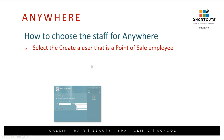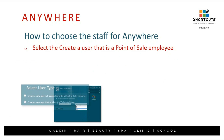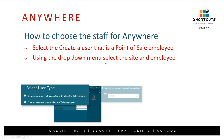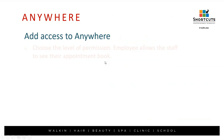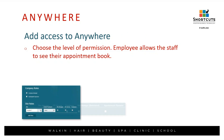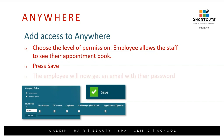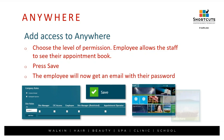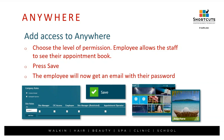You'll select the staff, make sure Shortcuts has their username — which is usually an email — their first name, and their last name. Those are three critical pieces of information. Then the level of permission: are they site managers, employees, should they have appointment operator permission? Once you press Save, they get an email and can log in and access whatever you allow them to access.